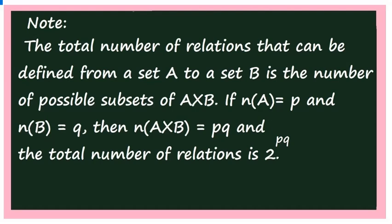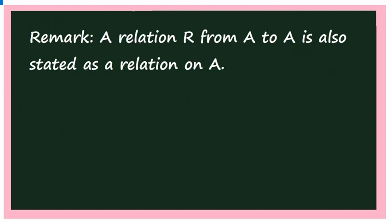The last result: a relation R from A to A is also stated as a relation on A. If it is from A to B we call it a relation from A to B; if it is from A to A, we simply say a relation on A. This is the theoretical concept of relations, and in the next video I will explain the method of solving numerical questions. Thank you.